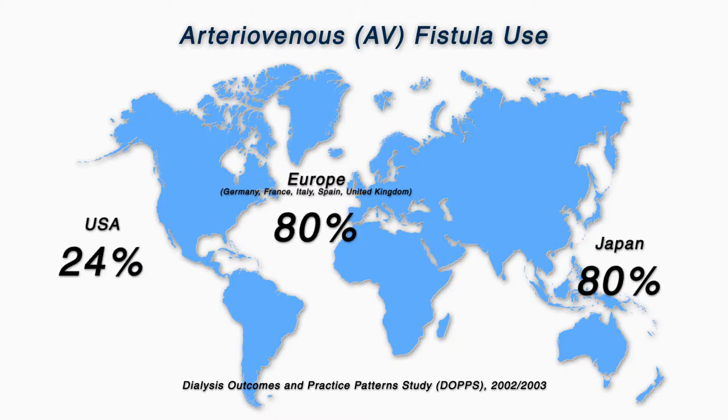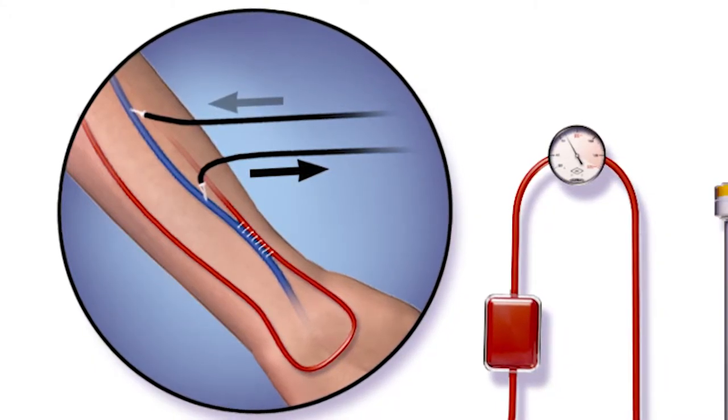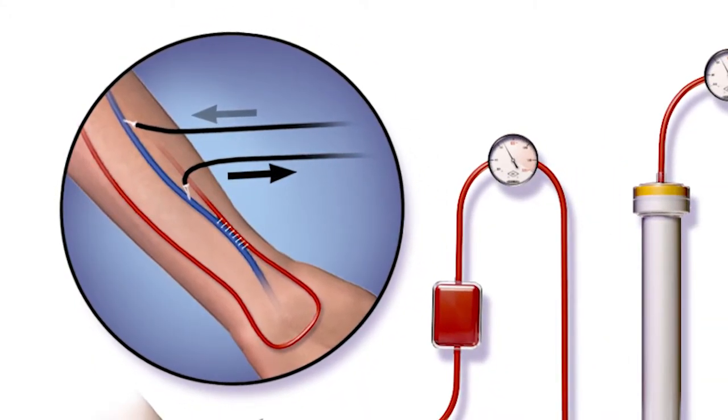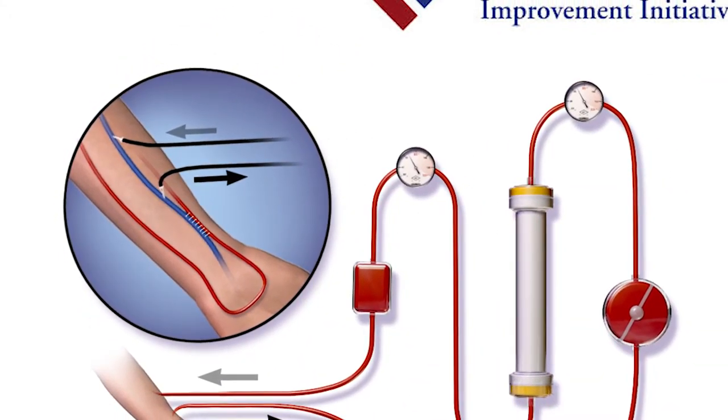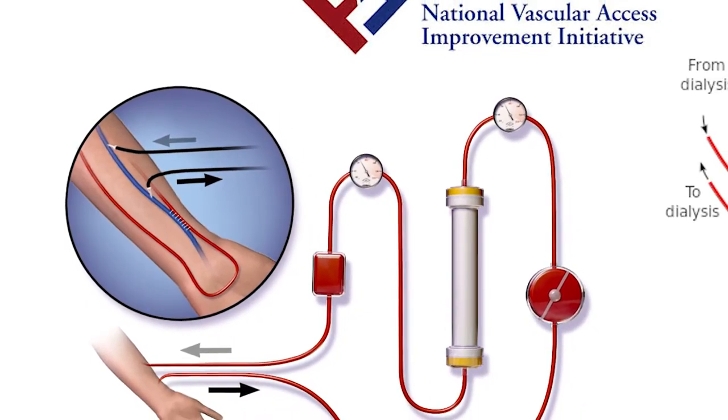Much of the differences in outcomes across countries was indeed due to differences in fistula use. These findings were very important with respect to CMS as it implemented what was called the Fistula First initiative, and ultimately the Fistula First Catheter Last initiative.